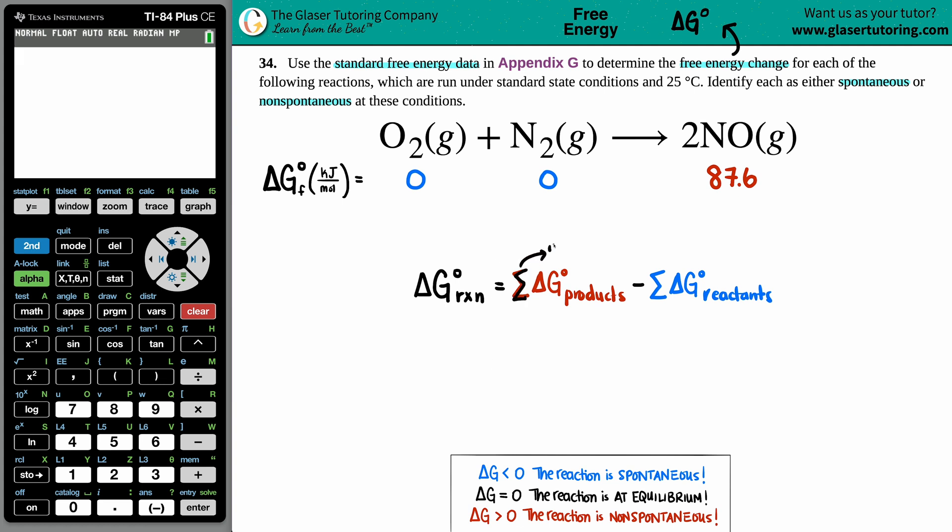Sum of the products minus the sum of your reactants. So products minus reactants.